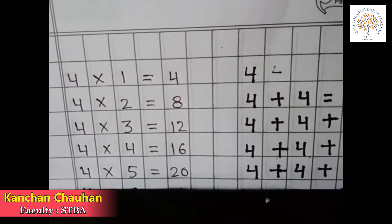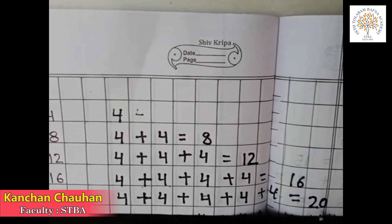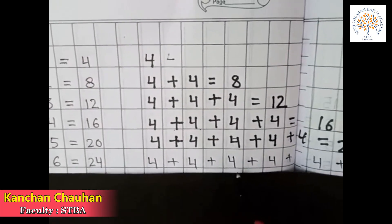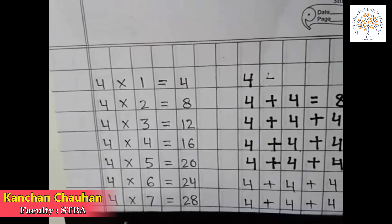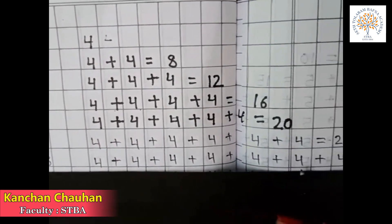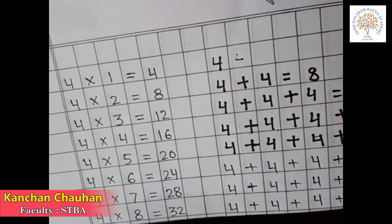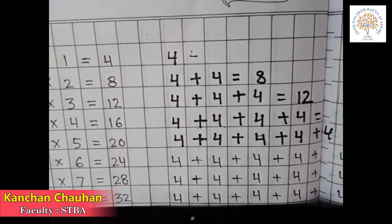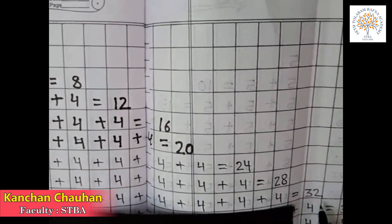4 5s are 20. 6 times 4 is equal to 24. 4 7s are 28 — it means 7 times 4. 7 times 4 is equal to 28. 4 8s are 32 — it means 8 times 4. 8 times 4 is equal to 32.